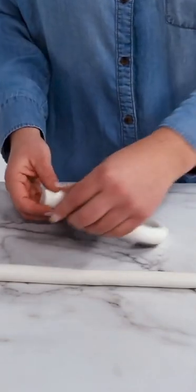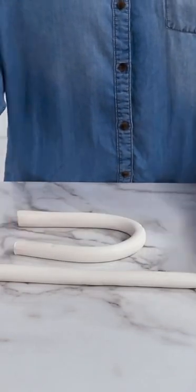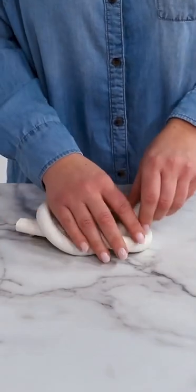One tube can make a basic knot and two tubes can create a square knot. Bend them into horseshoe shapes then slip the ends through the loops.